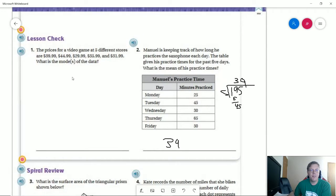On the back, our mode is going to be any number that repeats. Again, for the second time that we've asked about that, there is not one. Number two, if we add all of these number of minutes up, we get 195 divided by five, which would give us 35 minutes as the mean or average practice time.